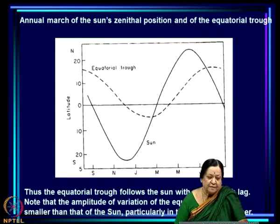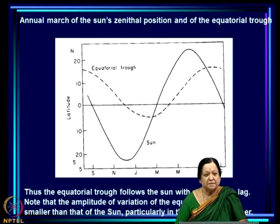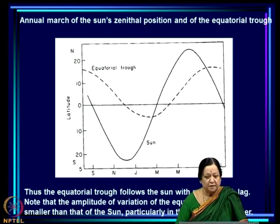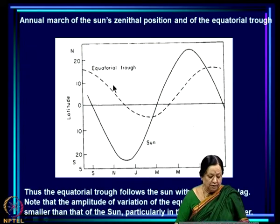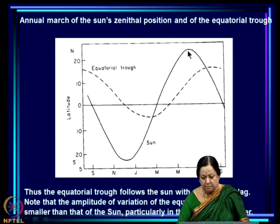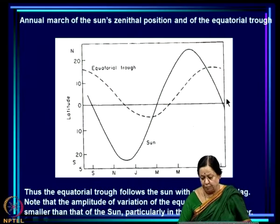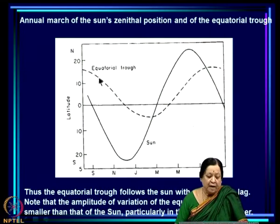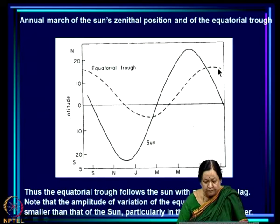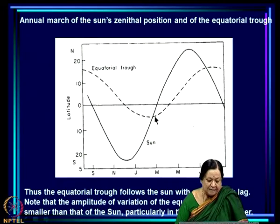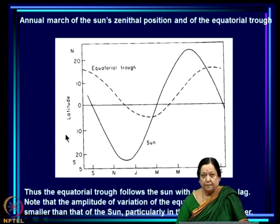It is only after the sea surface temperature attains the maximum latitude that the equatorial trough moves there. In summary: the equatorial trough follows the seasonal march of the sun but with a lag of about two months, and the amplitude of latitudinal variation of the equatorial trough is less than that of the sun which is forcing it.